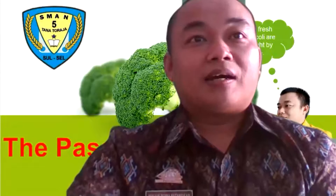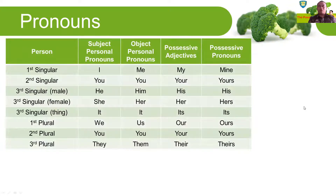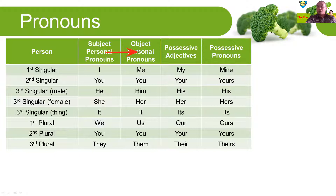Here are some pronouns in English and their changes. We need to recognize them first so it will make it easy to change the subject or object from the active sentence into the passive sentence. Here are all of the pronouns in English. First, we have subject personal pronouns, object personal pronouns, and also adjective and possessive pronouns.